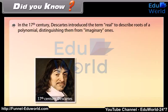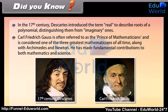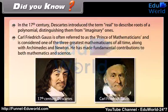Did you know: In the 17th century, Descartes introduced the term 'real' to describe roots of polynomials, distinguishing them from imaginary ones. Carl Frederick Gauss is often referred to as the Prince of Mathematicians and is considered one of the three greatest mathematicians of all time, along with Archimedes and Newton. He made fundamental contributions to both mathematics and science.